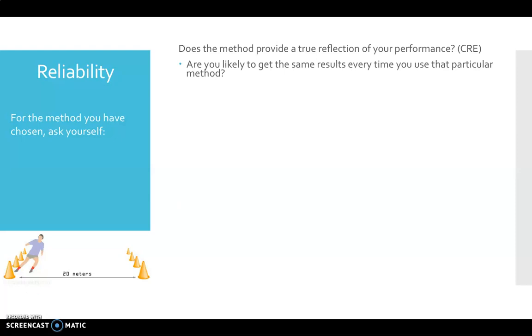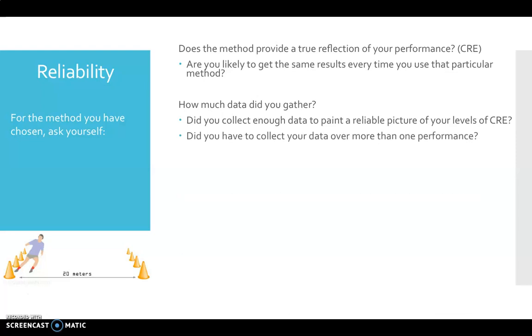Are we likely to get the same types of results every single time we use this method? Did we actually gather enough data in the first place to paint a reliable picture of our levels of CRE? Did we actually have to collect it over more than one performance? And what type of data are we gathering? This refers to objective or subjective data. Referring back to the bleep test, this is more objective style data that we're gathering.